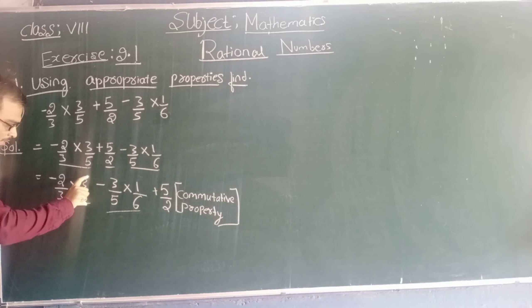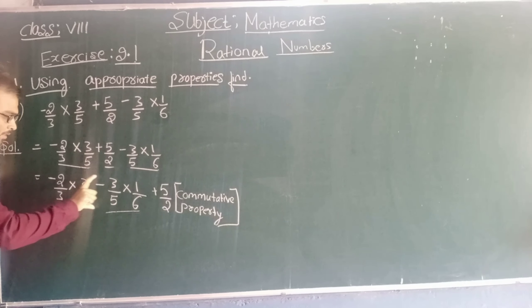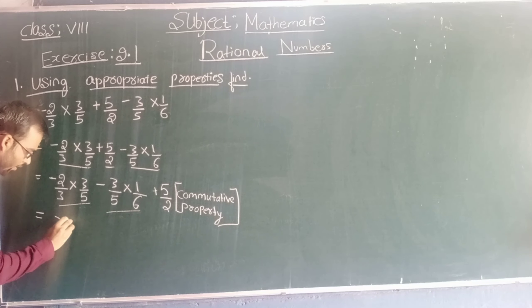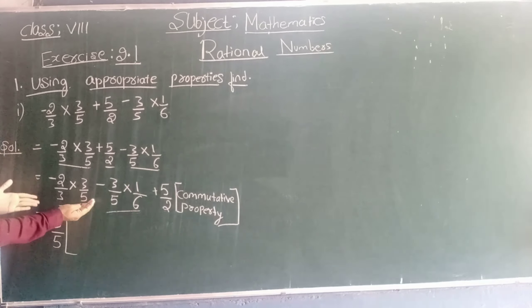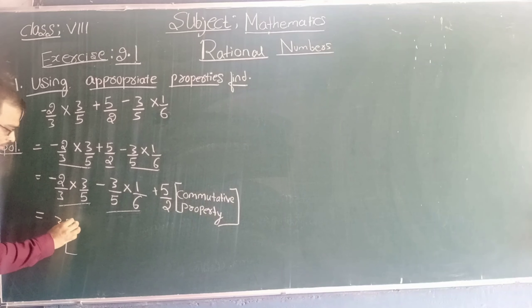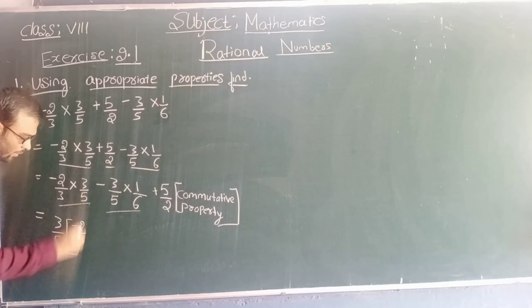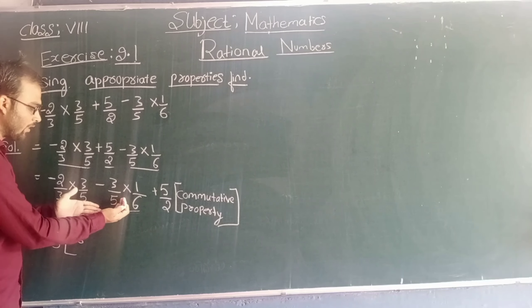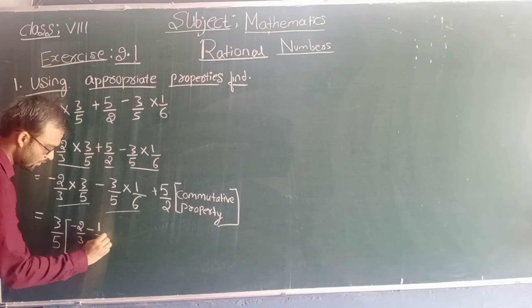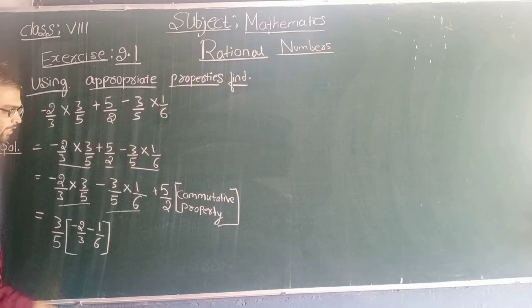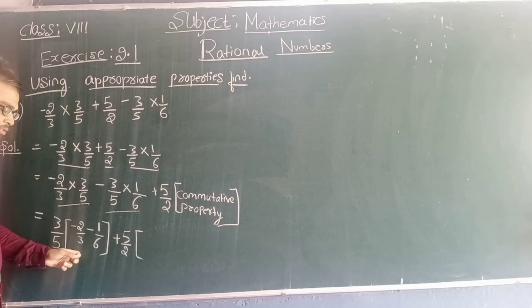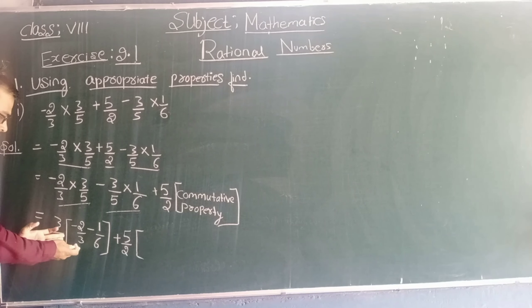Students, in these two terms, 3 by 5 is common. Don't worry about the sign. As 3 by 5 is common, we will take 3 by 5 outside as common factor. From this term, I have taken 3 by 5 outside, so what is remaining? Minus 2 by 3. So we write minus 2 by 3. From the next term, I have taken 3 by 5 outside, so what is remaining? Minus 1 by 6. So minus 1 by 6. Write this as it is. Here we have used the distributive property: A into B minus C.